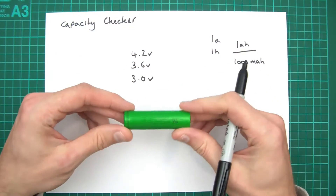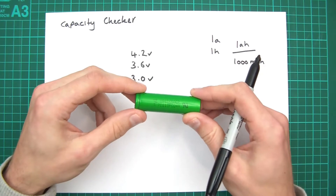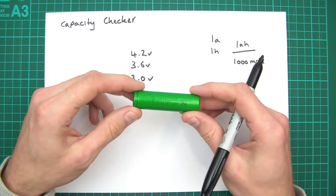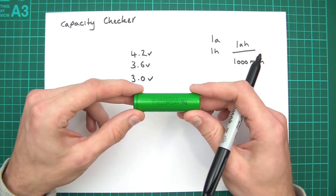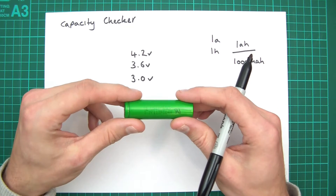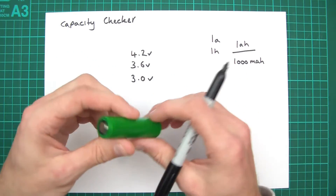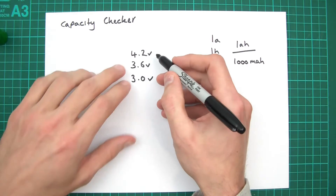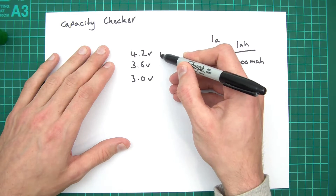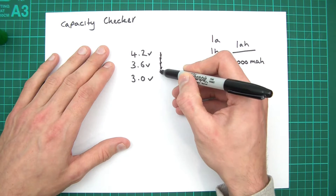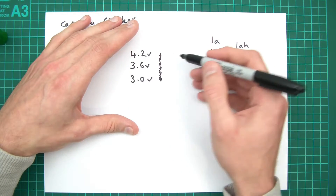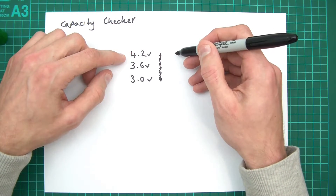So if we fully charge the cell to 4.2 volts, apply a 1-amp load, and measure how long it takes to reach 3 volts, we could simply measure the capacity. Theoretically yes, but it's actually not that simple. The problem is that it's hard to maintain a 1-amp load, because as the battery starts to discharge, the voltage drops — and if the voltage decreases, the load will decrease too.